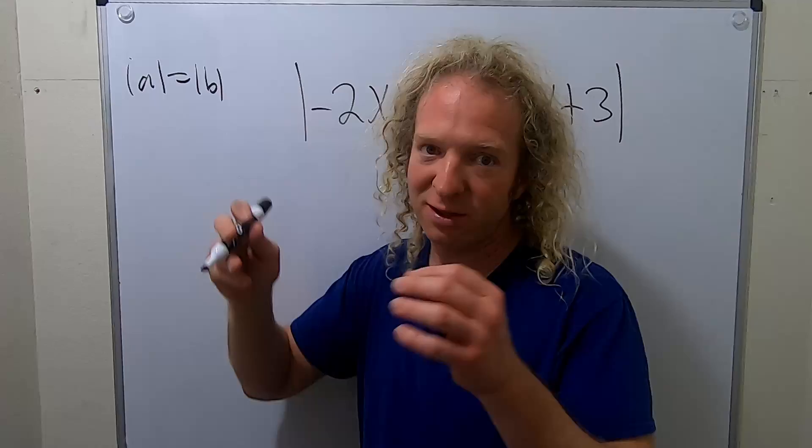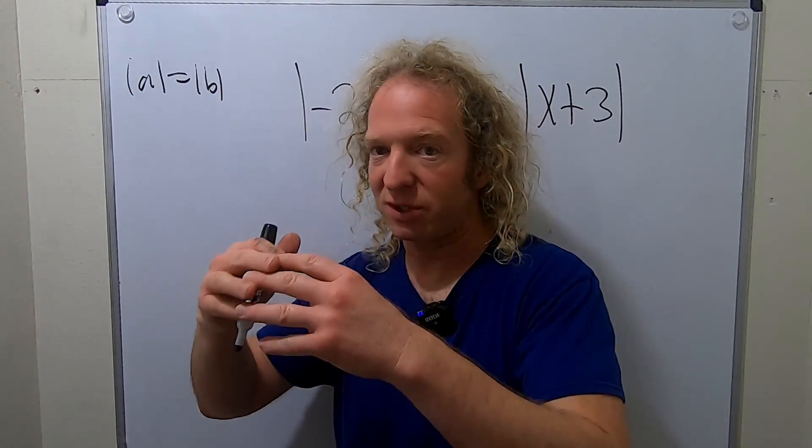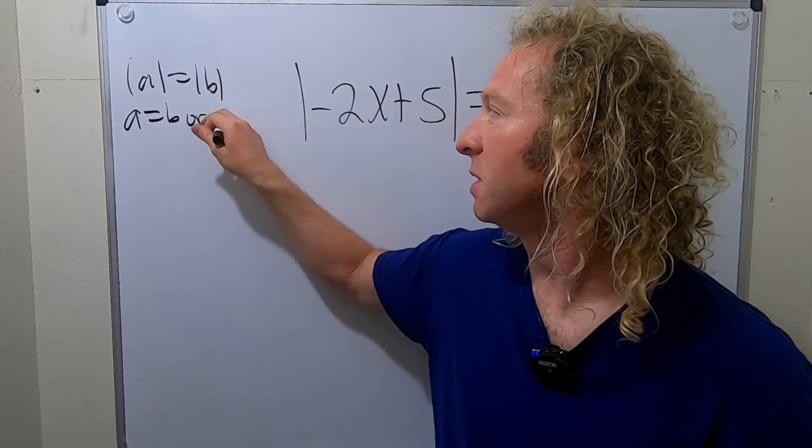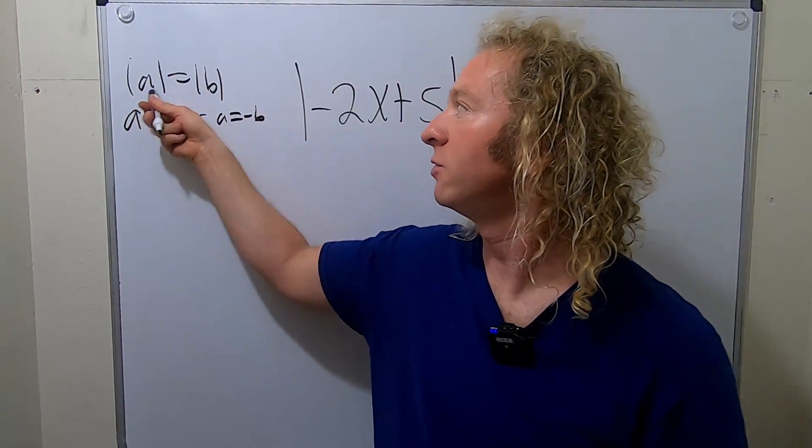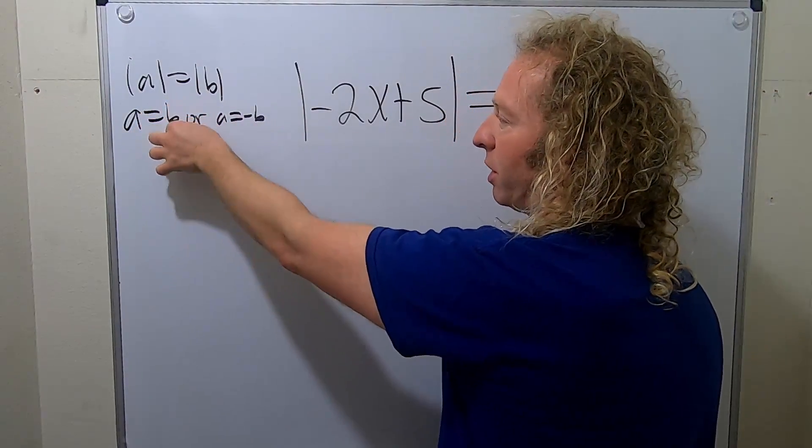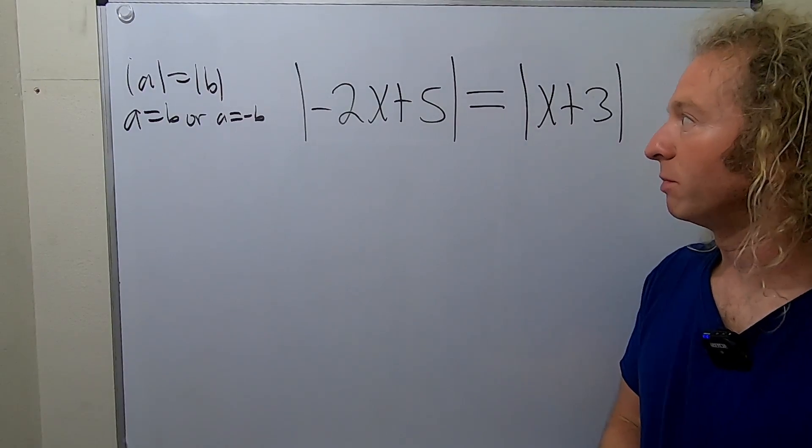Recall the absolute value of A is the distance between A and zero. So these numbers have the same distance from zero, so they must be the same or they must be opposites. So whenever you have two absolute values, you can drop the absolute values and you can just put a plus and a minus. That's exactly what we're going to do in this problem here.